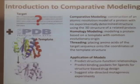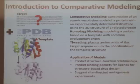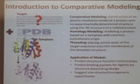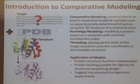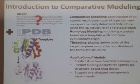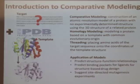Comparative modeling is when you want to construct an atomic resolution model of a protein, but you don't know what the structure is experimentally. So you have a sequence of your protein, but you do not have a structure. In comparative modeling, you use a template, and that template comes from the protein database — an experimentally determined structure.